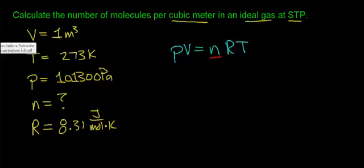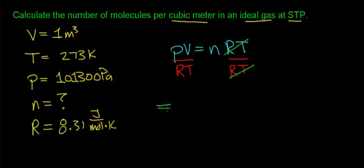My first step is I'm going to solve this equation for the number of moles. To do that, I need to isolate n. And the first thing I'm going to do is divide both sides by RT. What I do to one side of an equation, I must do to the other side.